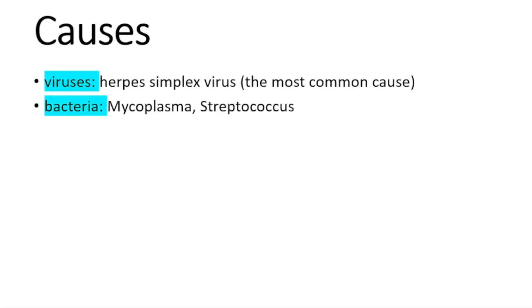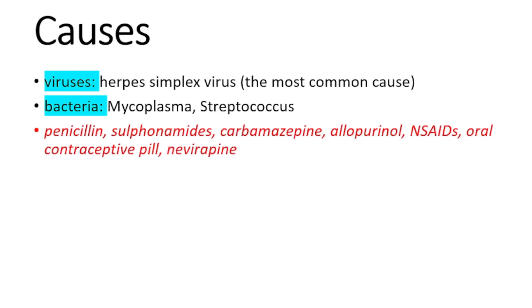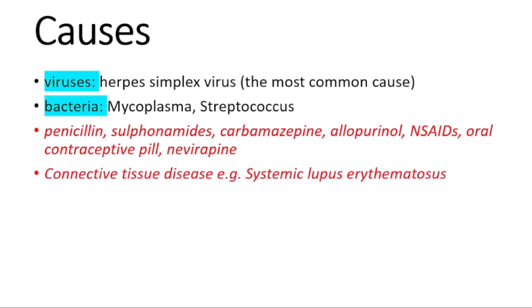Causes include infections — viral or bacterial. Herpes simplex virus is the most common viral cause. Bacterial causes include Mycoplasma and Streptococcus. Medications such as penicillin, NSAIDs, or oral contraceptive pills can also trigger it. Additional causes include systemic lupus erythematosus, sarcoidosis, tumors, and menstruation.